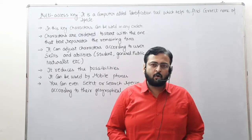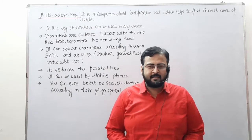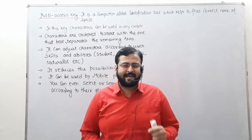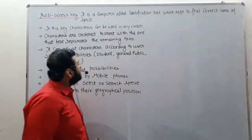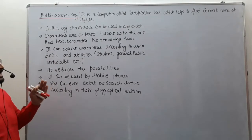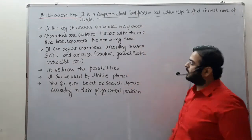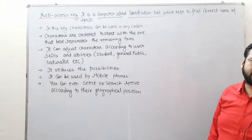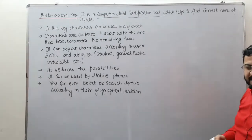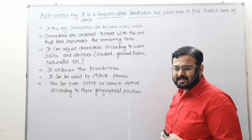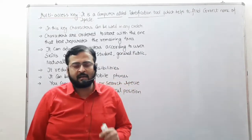Hello everyone, today we are going to discuss a very innovative taxonomical aid — the multi-access key. This multi-access key is basically a computer-aided identification tool which helps to find the correct name of any given species. This is the latest type of taxonomical aid.